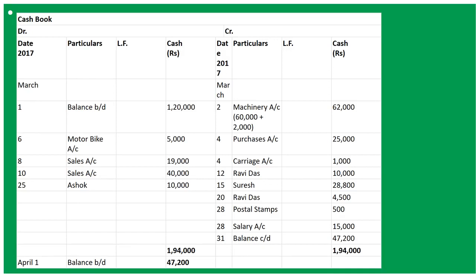March 8: sold goods for cash less 5% cash discount, 20,000. So To Sales 20,000, calculate 5% which is 1,000, that will be deducted from 20,000, and the amount entered will be 19,000.